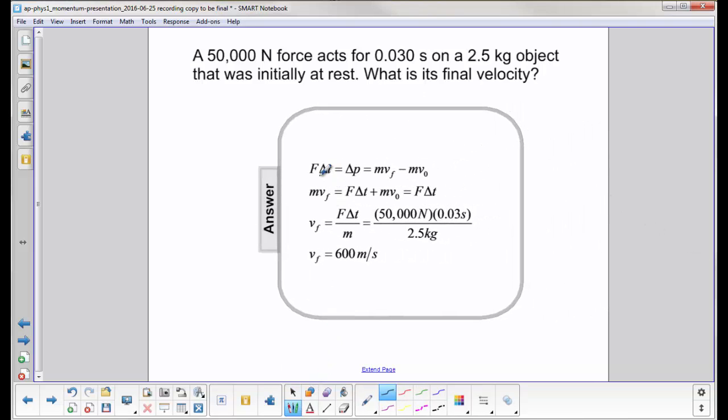We start with the impulse momentum equation. F delta t is a change in momentum.